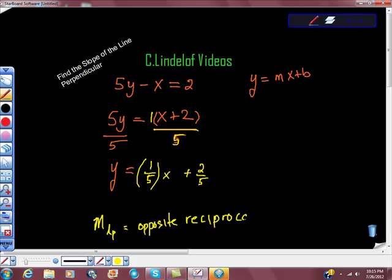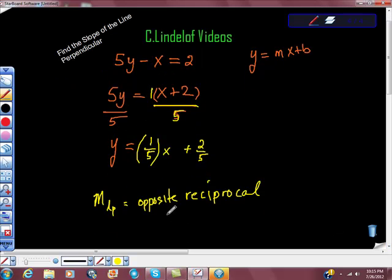So the opposite reciprocal. The opposite of positive 1 fifth is negative, and the reciprocal of 1 fifth is 5 over 1. So the slope is negative 5.